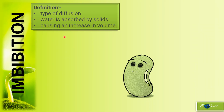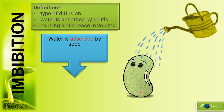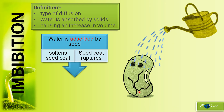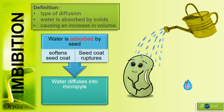Imbibition by definition is a type of diffusion where water will absorb into a solid and then cause that object to increase in volume. When we water a seed or soak the seed in water, the water will be adsorbed. Notice here I use the word adsorbed, meaning that the water will actually just stick to the seed coat, whereas absorbed means the water will enter the solid.